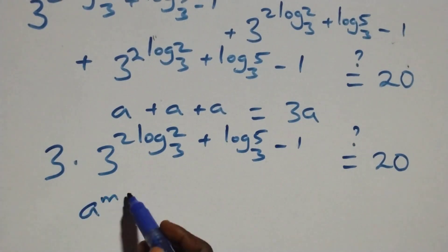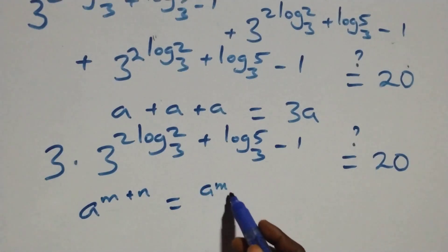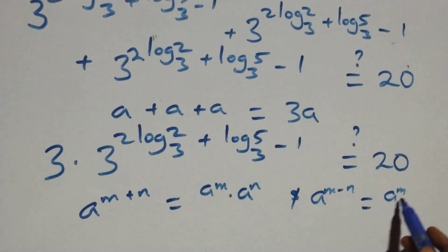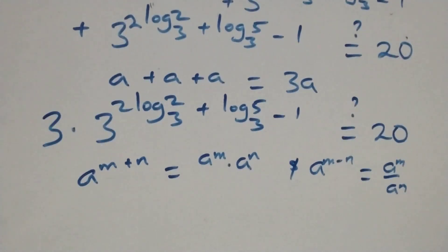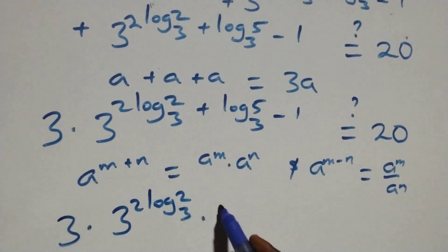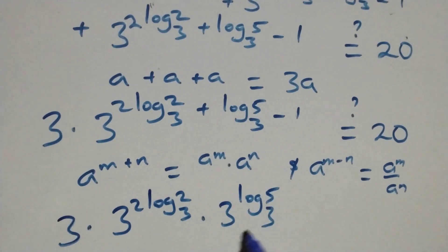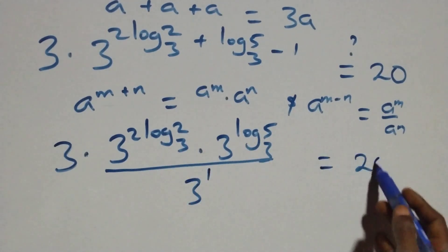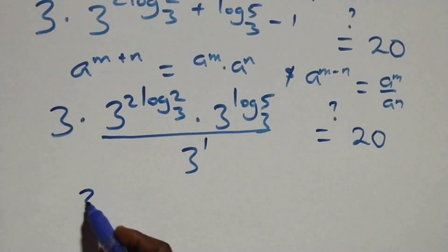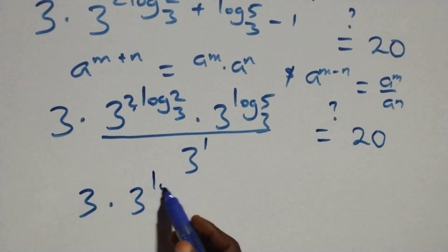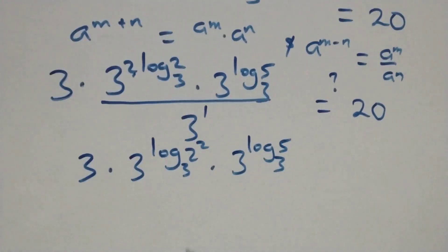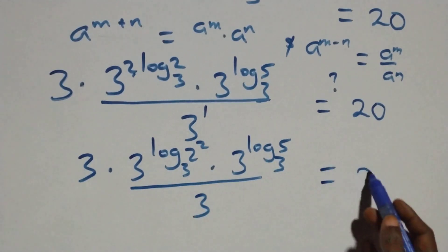This follows when we have a raised to power n plus n, this is the same as a raised to power n times a raised to power n. Also, a raised to power n minus n is the same as a raised to power n over a raised to power n. This becomes 3 times 3 raised to power (2 log 2 base 3) times 3 raised to power (log 5 base 3), over 3 raised to power 1, which equals 20. That is, 3 times 3 raised to power log 2 squared base 3, times 3 raised to power log 5 base 3, over 3, equals 20.